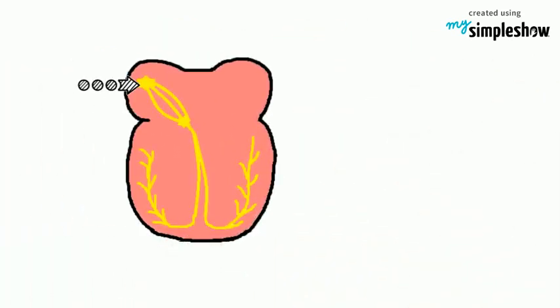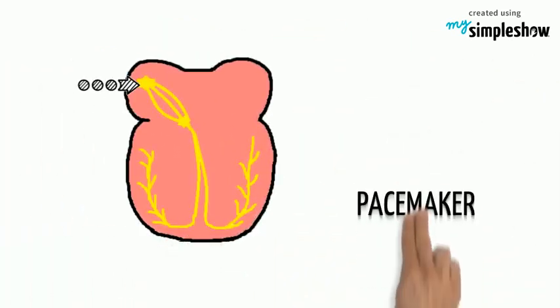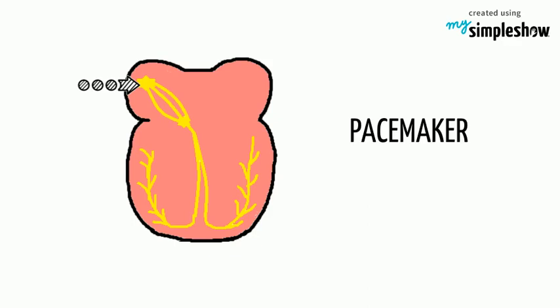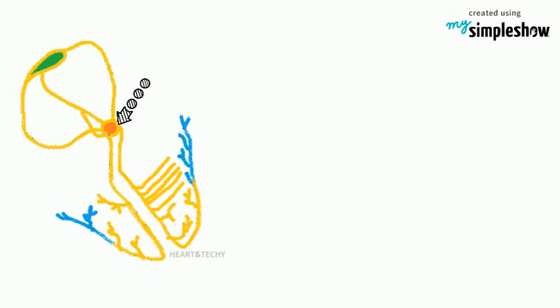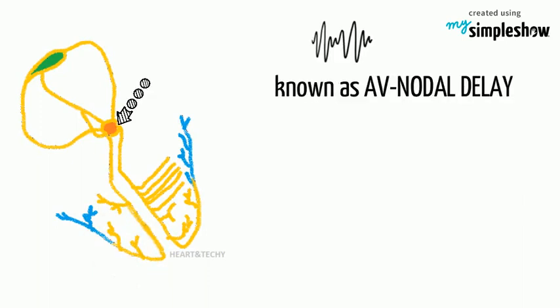The SA node is known as the pacemaker of the heart and is located in the upper wall of the right atrium, at the junction where the superior vena cava enters.